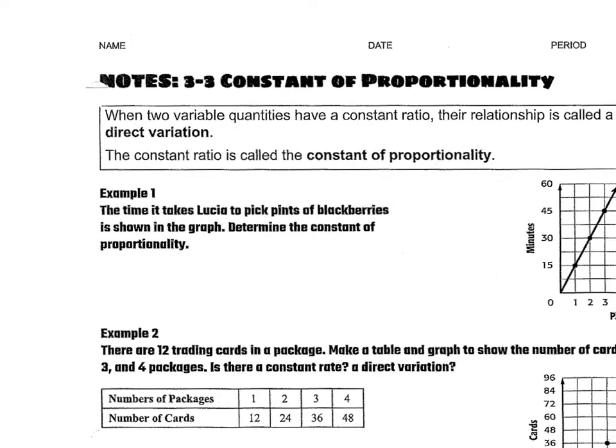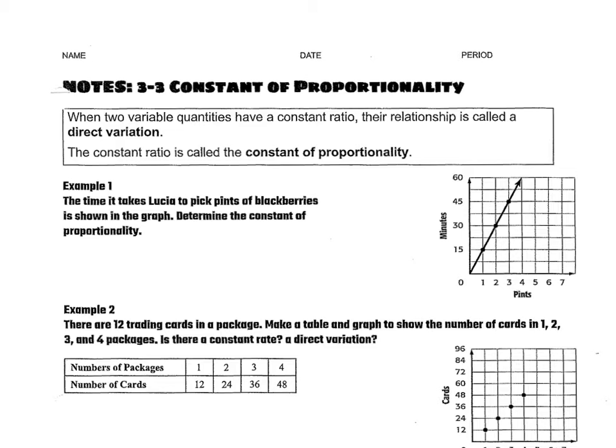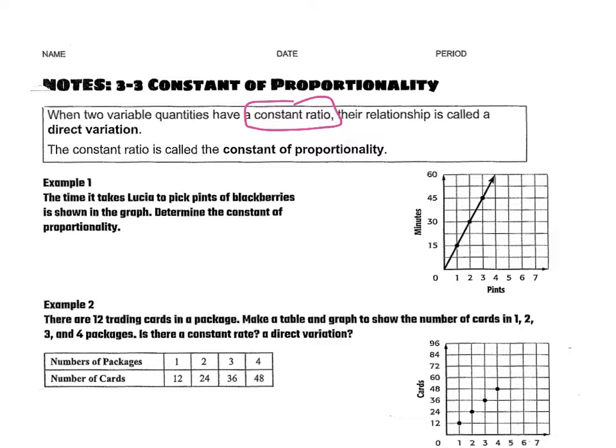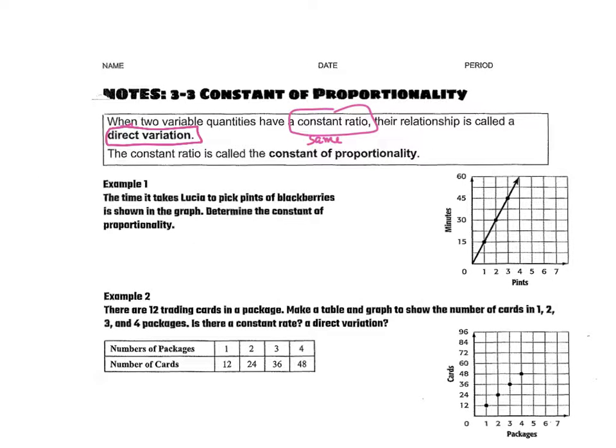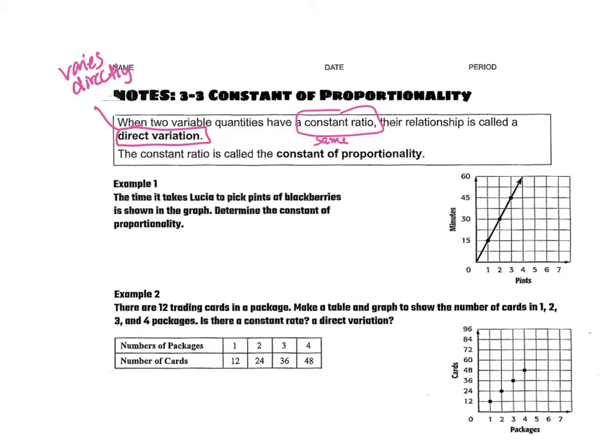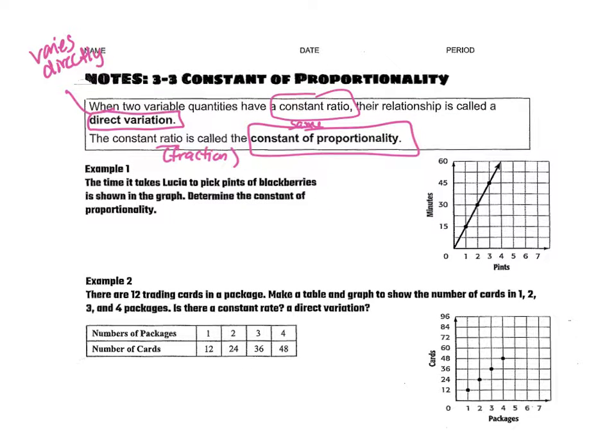It's just a different name for all of those things we've already done. So when two variable quantities have a constant ratio, remember constant means the same, their relationship is called a direct variation. The constant ratio is called the constant of proportionality. It's really the same thing that we did yesterday, that constant rate of change. We're just seeing if two quantities they give us are proportional to each other.